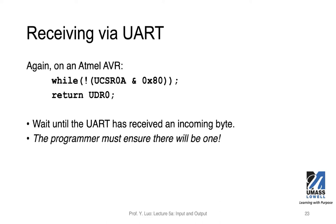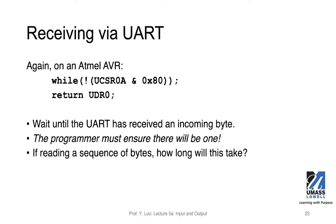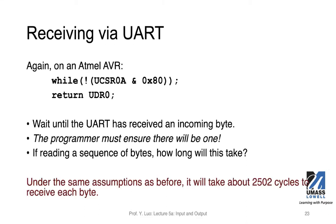The programmer must ensure there will be data available before you can proceed. If there's no data available, your program is going to get stuck in the while loop. The reading will take a similar number of cycles as calculated earlier. From these two program segments — receiving and transmitting — we can see that polling has to be implemented as part of your program. We must explicitly check the values of certain registers and certain bits, and based on those values determine whether we keep polling or can proceed with the actual send or receive operation.